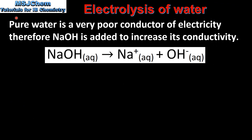Next we look at the electrolysis of water. Pure water is a very poor conductor of electricity, therefore sodium hydroxide is added to increase its conductivity. Sodium hydroxide dissociates to form sodium ions and hydroxide ions.